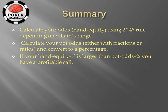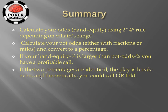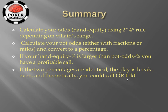A quick point about the relevance of pot odds: if your hand equity is larger than the pot odds percentage, you have a profitable call. If the two percentages are identical — for example you need 25% and the pot is giving you 3 to 1, which is also 25% — the play is actually break-even, and theoretically you could call or fold. In practice, if people are getting exactly the odds to call they almost always call, but it's interesting to understand that theoretically calling is higher variance since you either lose more or win more a higher percentage of the time.